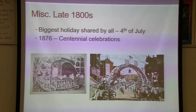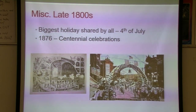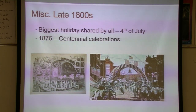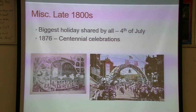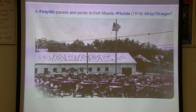The biggest holiday of that time was the 4th of July — not Christmas or Thanksgiving. Rich or poor, city or country, everyone celebrated. Can you imagine the 1876 centennial celebration — America's 100th birthday? Coming up in 2026 will be the 250th anniversary. There's an 1880s Orlando parade photo, and a Fort Meade 1914 parade photo showing a whole lot of Model T cars.